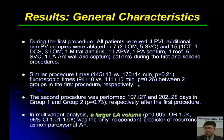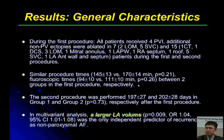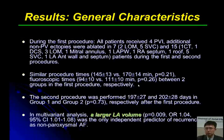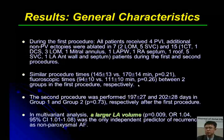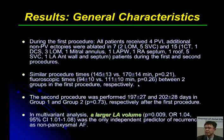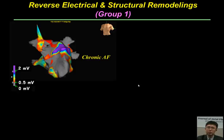Regarding general results: during the first procedure, all patients received pulmonary vein isolation. Additional non-pulmonary vein ectopies were ablated in 7 patients during the first procedure and 15 patients during the second procedure. Procedure and fluoroscopic times between groups in the first procedure were similar. The second procedure was performed around 200 days in both groups. In multivariate analysis, larger left atrial volume was the only independent predictor of recurrence as chronic atrial fibrillation.